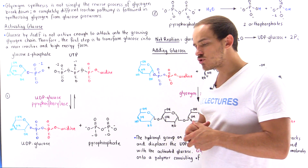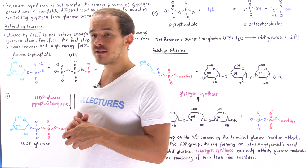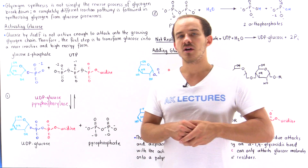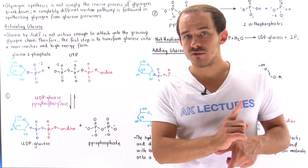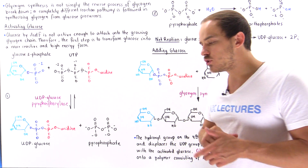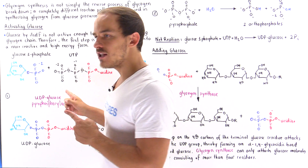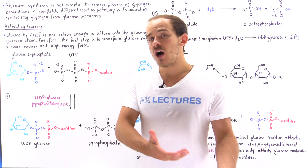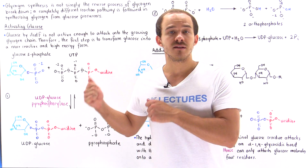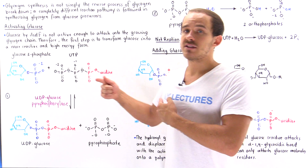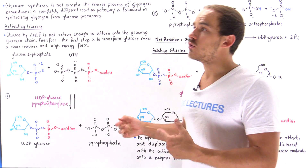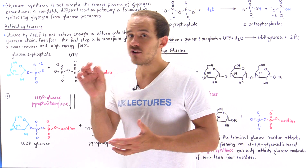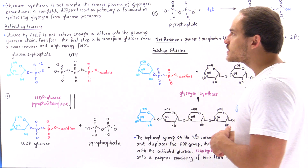Let's suppose we ingest a meal that is rich in carbohydrates. What that means is inside our blood plasma we're going to have a rise in blood glucose levels. Once blood glucose levels rise, the liver cells will want to maintain proper blood glucose levels, so they will uptake some of that glucose into the liver cells. These liver cells will take the glucose precursor molecules and begin building glycogen, storing it in tiny granules found in the cytoplasm of liver cells.